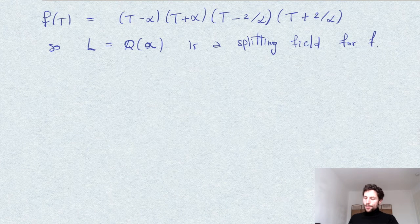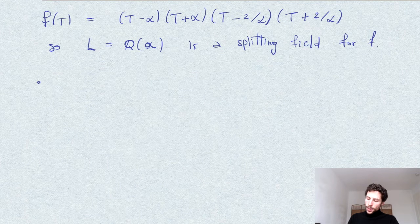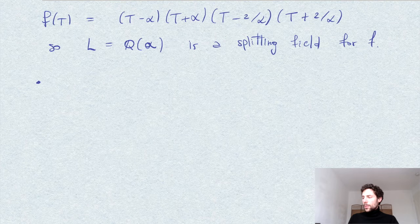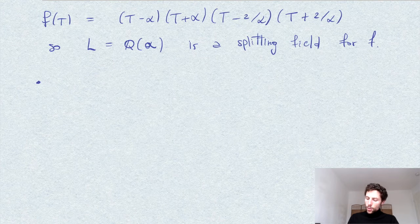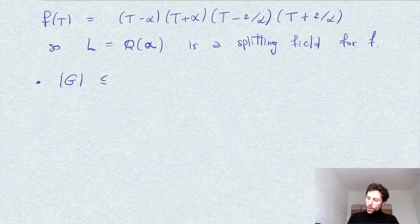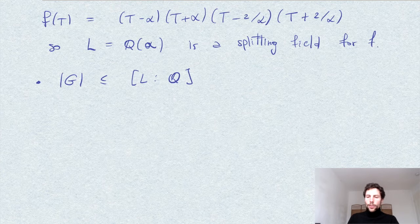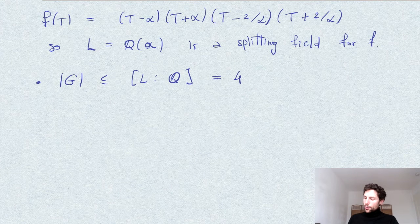So about the Galois group, what we can say is that the group G, the order of this is bounded by the degree of L over Q, which you can easily verify is 4.